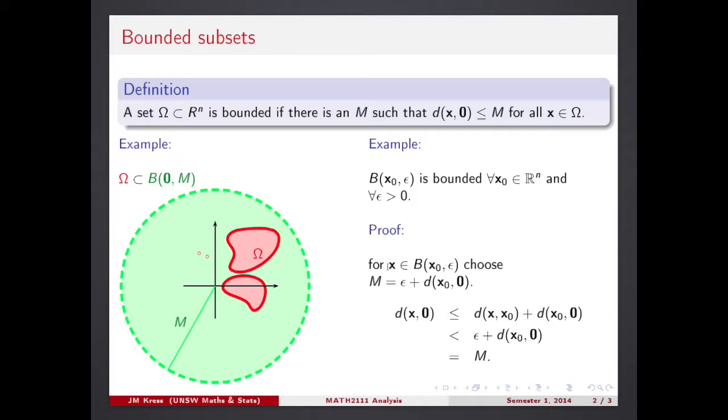And that's the argument which convinces everyone that it does work. Look at this. If I measure the distance from this x point, randomly chosen from this epsilon ball, to the origin, I can use triangle inequality. This is a step, that's a triangle inequality step.